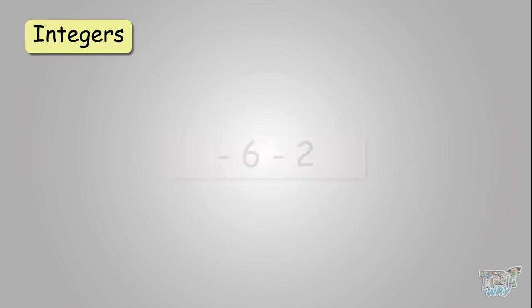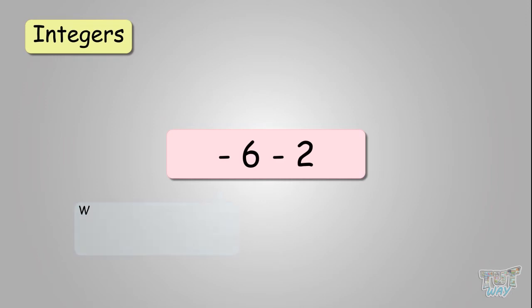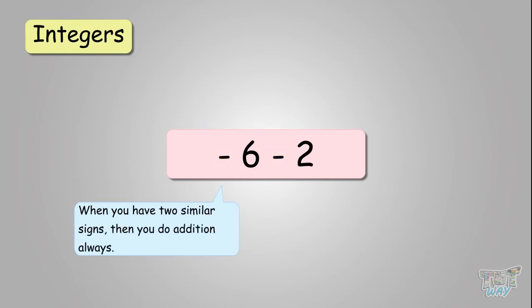Next: negative six minus two. When you have two similar signs, you do addition. You have minus six minus two — you will add these numbers, and the answer will get the negative sign. So the answer is negative eight.